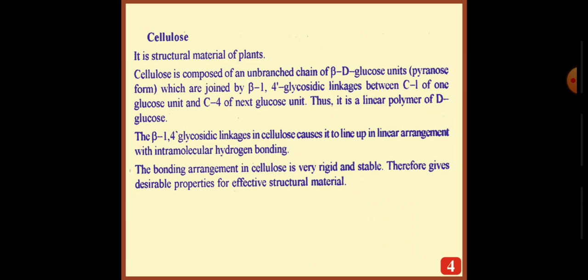Cellulose is the structural material of plants. Cellulose is composed of an unbranched chain of beta-D-glucose units in pyranose form, which are joined by beta-1,4 glycosidic linkages between C1 of one glucose unit and C4 of next glucose unit. Thus, it is a linear polymer of D-glucose. The beta-1,4 glycosidic linkages in cellulose causes it to line up in linear arrangement with intramolecular hydrogen bonding. The bonding arrangement in cellulose is very rigid and stable, therefore gives desirable properties for effective structural material.